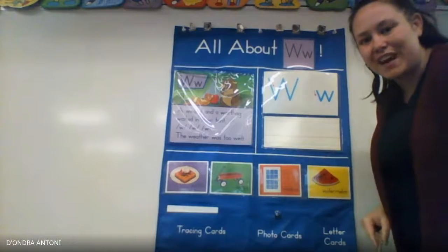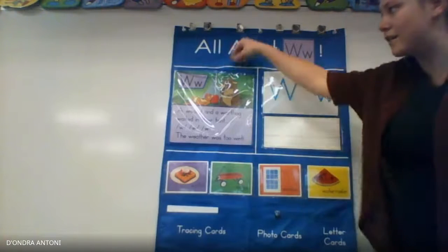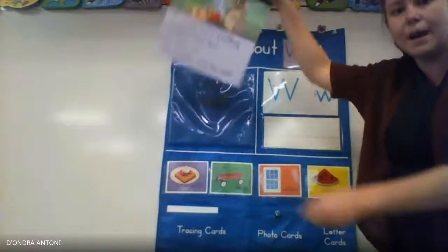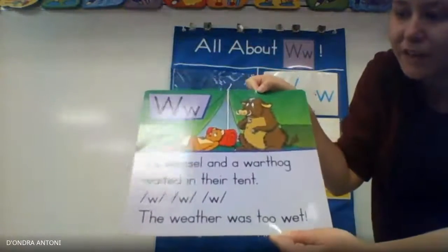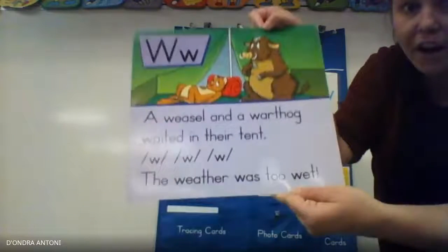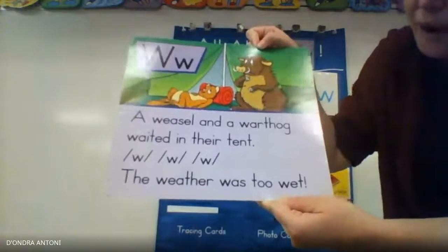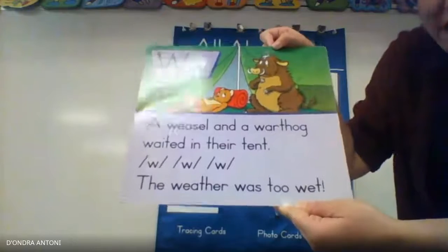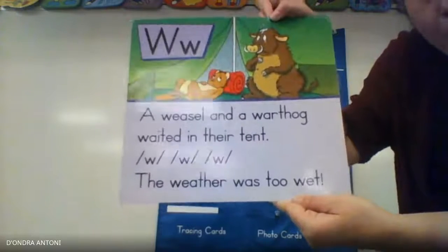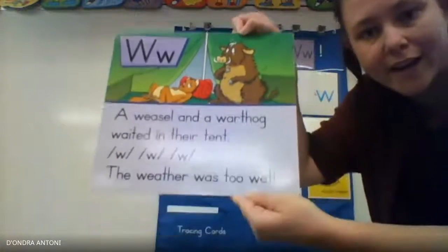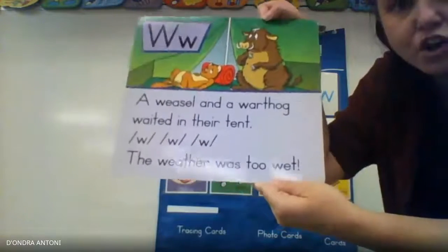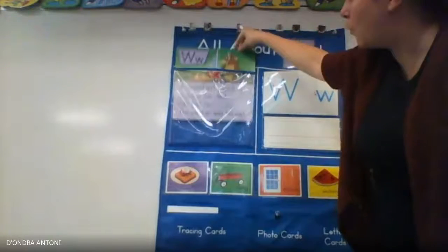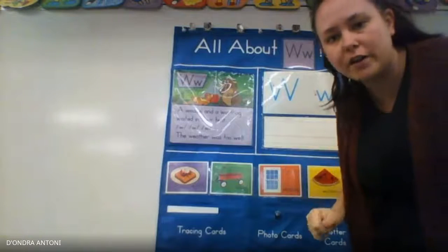Good job friends. Now let's see what our W story is all about. A weasel and a warthog waited in their tent. The weather was too wet. That poor weasel and warthog.